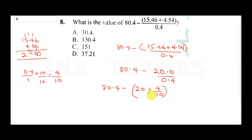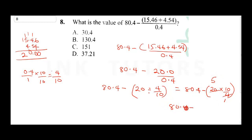We can simplify: 20 divided by (4/10) is the same as 20 times 10 over 4. 4 into 20 is 5, so 5 times 10 gives us 50. Therefore, 80.4 minus 50 gives us 30.4. Our final answer is 30.4.